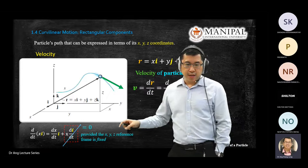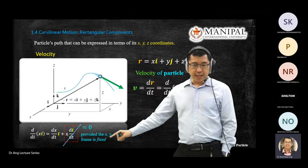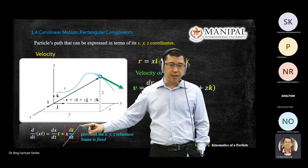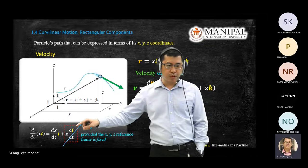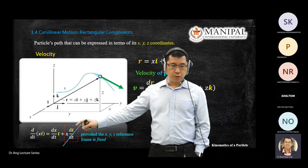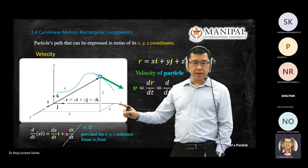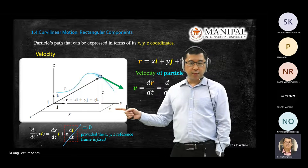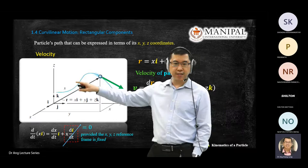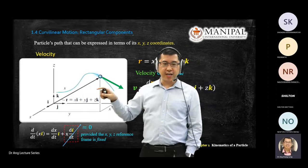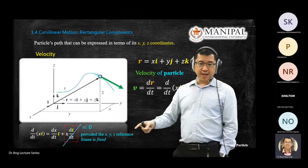Your x, y, z reference frame is fixed — it doesn't move. However, if you learn about spacecraft dynamics later on, when your spacecraft turns and twists, then this one is not zero. But in this simple case, your i direction does not change, so you put that as zero. When the origin doesn't move, your i vector is fixed and the velocity in the i direction is zero.